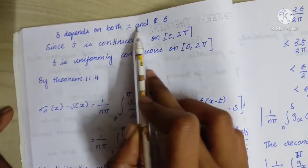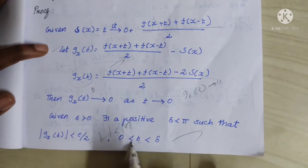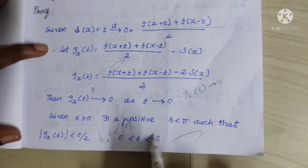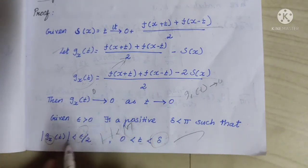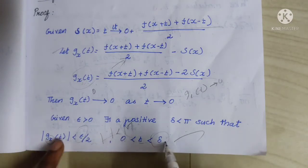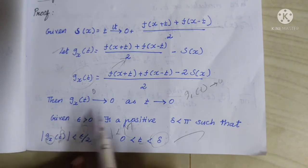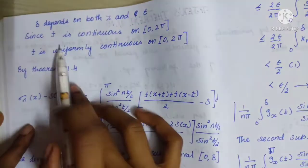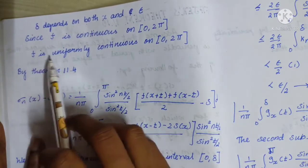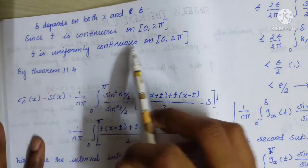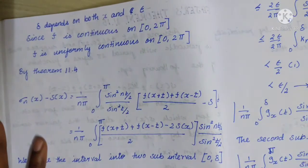δ depends on both x and π. So when 0 < t < δ, then δ depends on x and ε. Since f is continuous on the closed interval [0, 2π], f is uniformly continuous on [0, 2π]. By theorem 11.4, this is the C,0 summability of Fourier series. There is a note in that theorem we use.